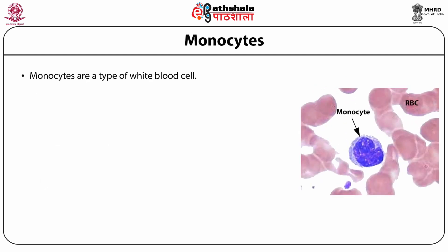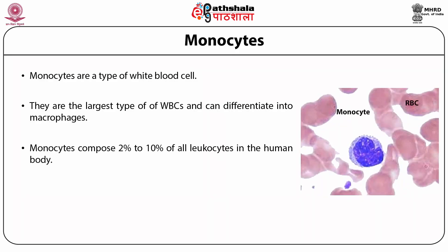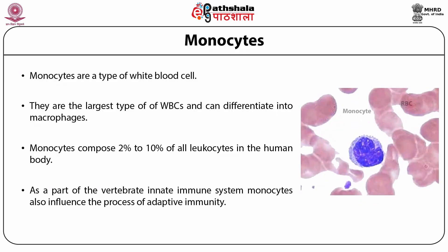Monocytes are a type of white blood cell. They are the largest type of WBCs and can differentiate into macrophages. Monocytes compose 2% to 10% of all leukocytes in the human body. As monocytes begin to travel, they enter major organs such as the liver and pancreas. As part of the vertebrate innate immune system, monocytes also influence the process of adaptive immunity.